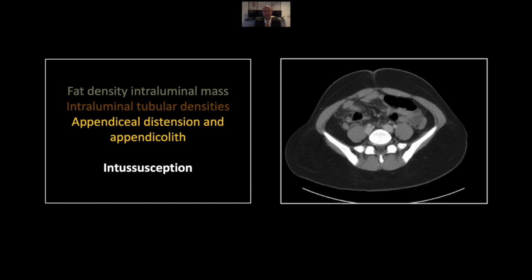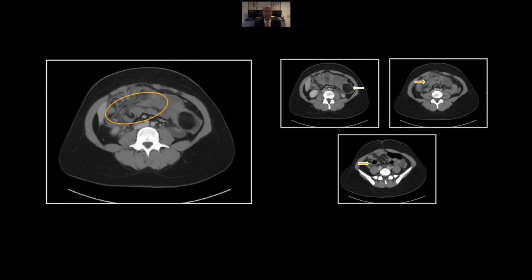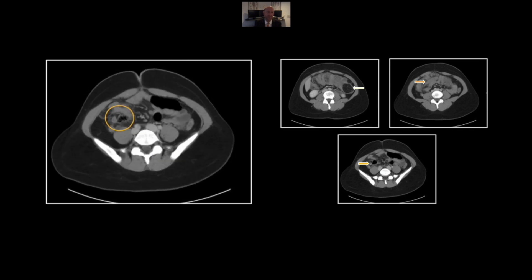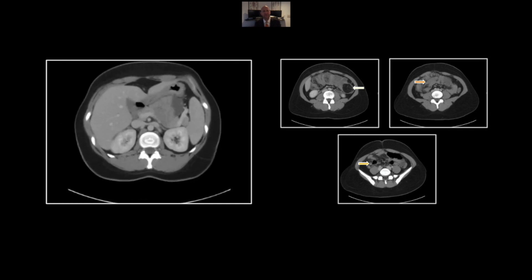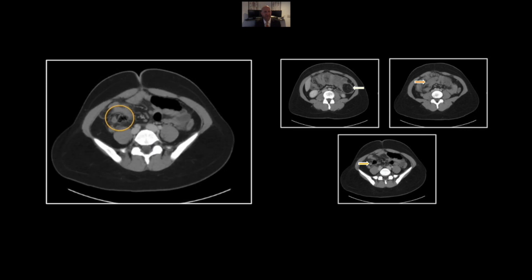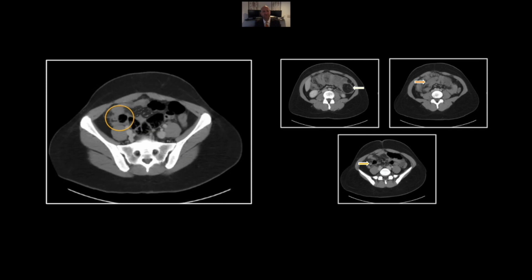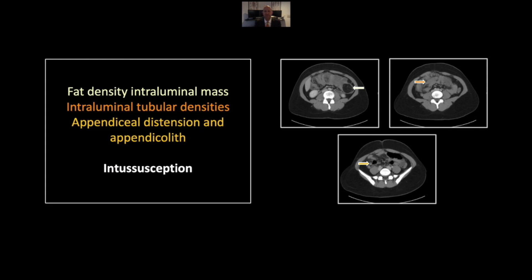Coming out the backside of the intussusception, you will see two tubular structures: one that represents a dilated appendix with an appendiceal tip, and the other adjacent to it, the dilated terminal ileum. That will be more apparent here on the sagittal. So there is our fat density mass, and here are the two tubular structures — one of which is an appendix and the other the dilated terminal ileum. That's probably mechanical appendicitis and not true infectious appendicitis. So that is a lipoma with resultant intussusception and sort of a pseudo-appendicitis.